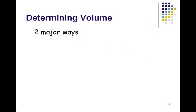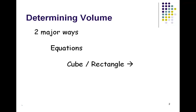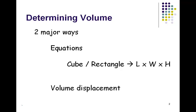If we're going to figure out density, first we need to figure out different ways that we can determine the volume. There are two major ways to determine volume. The first is to use the equation length times width times height. But what if the object is irregularly shaped? We could then use the volume displacement method to find volume.